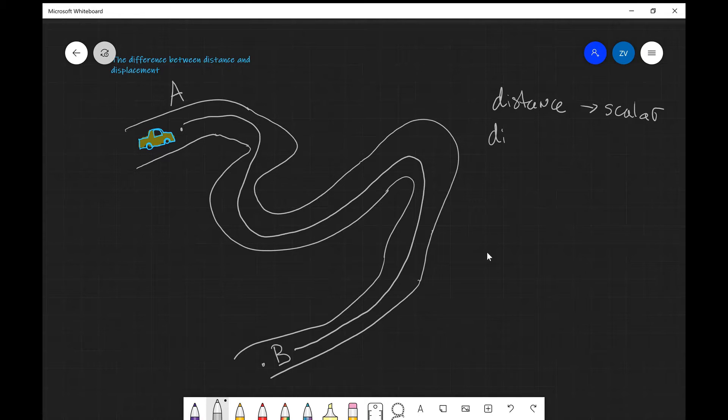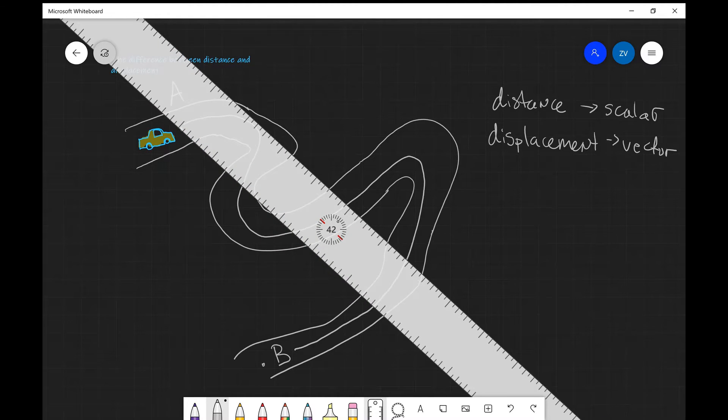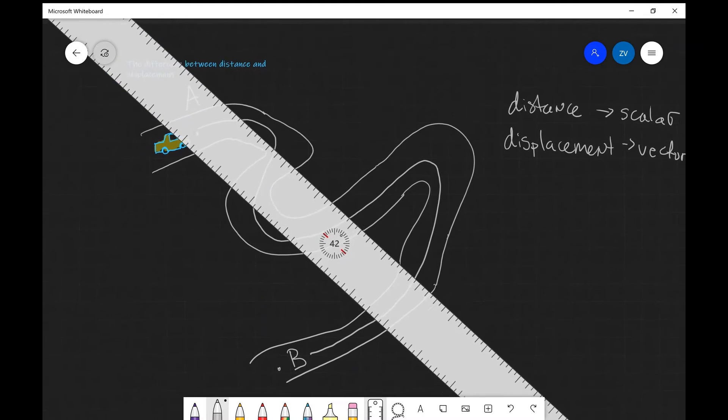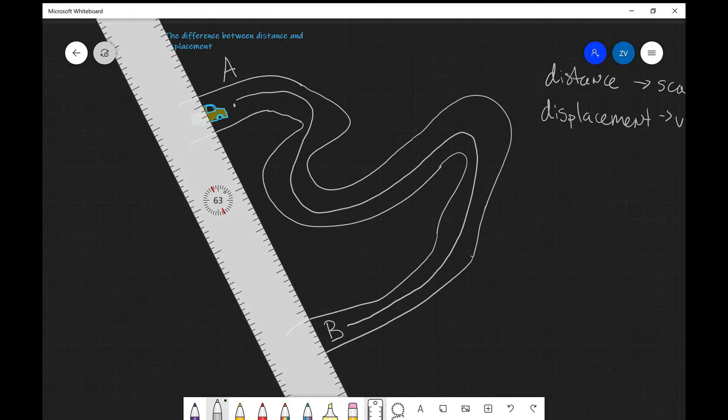Displacement though is a vector quantity. We know that we represent those vector quantities with an arrow. Now in this case the displacement from A to B will be a straight line between those two points.